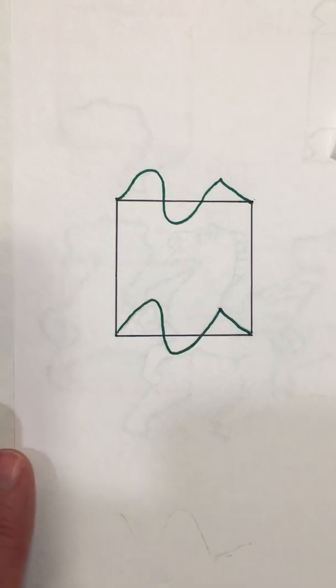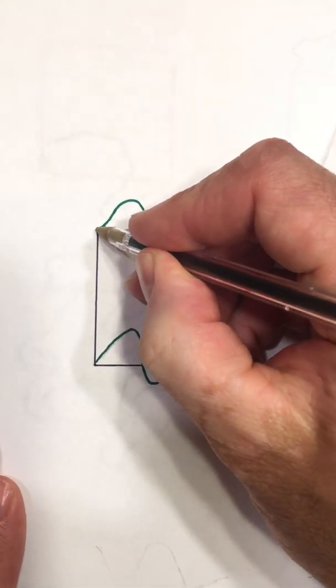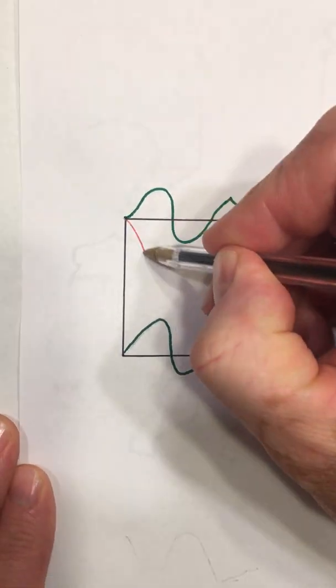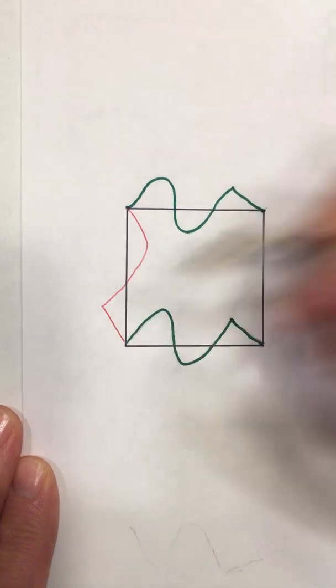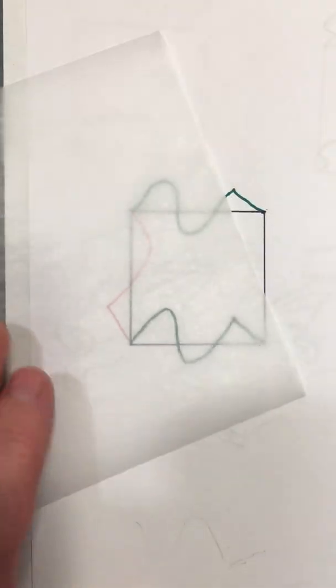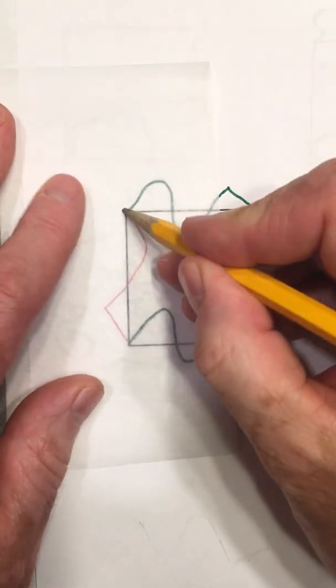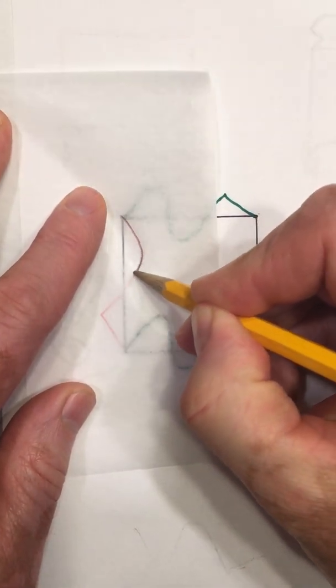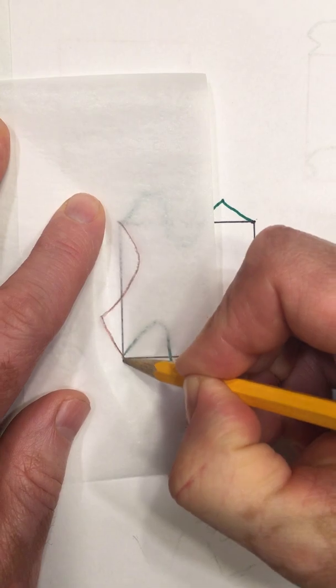And I can just go ahead and trace over that vertex to vertex. And now I'm going to do the same thing on this side. Maybe I'll just make a loop in, out, and down. And then I'm going to do the same thing. I'm going to just take this paper and go from vertex to vertex, tracing over.